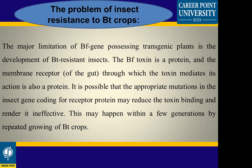However, with advantages there are some problems regarding resistance to Bt crops. A major limitation of Bt gene-possessing transgenic plants is the development of Bt resistance. Bt toxin is a protein that acts through a membrane receptor. Appropriate mutations in the insect receptor gene may reduce toxin binding and render it ineffective.